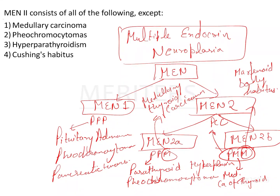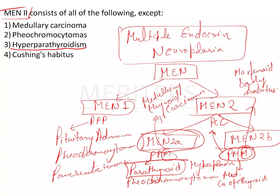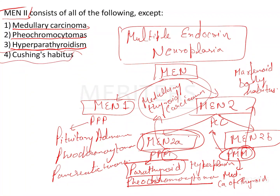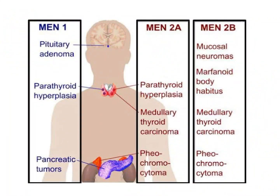Going back to the question about MEN2 — since neither MEN2a nor MEN2b is specified, we consider both. MEN2a includes parathyroid hyperplasia, pheochromocytoma, and medullary thyroid carcinoma. Cushing's habitus does not appear in MEN2a or MEN2b, so the answer — the exception — is Cushing's habitus.